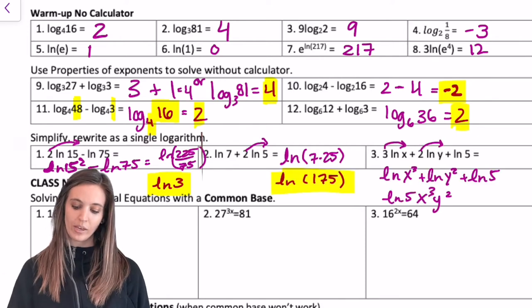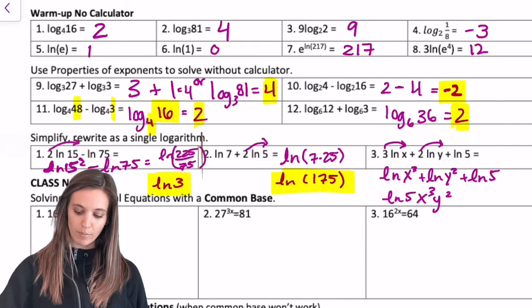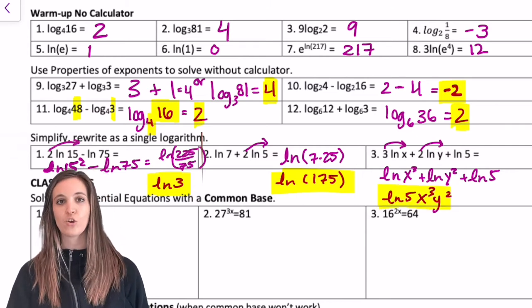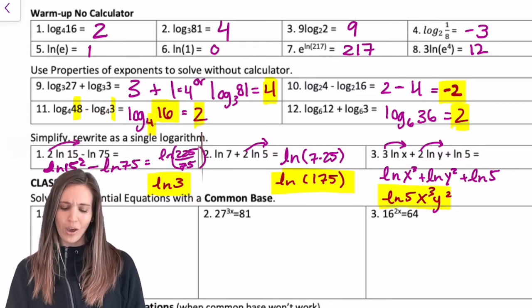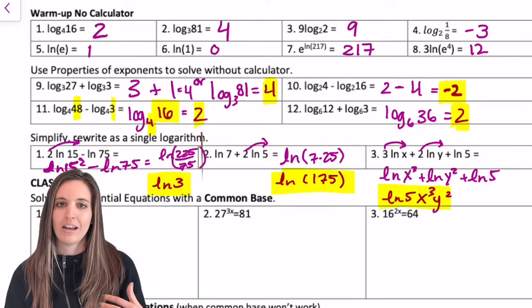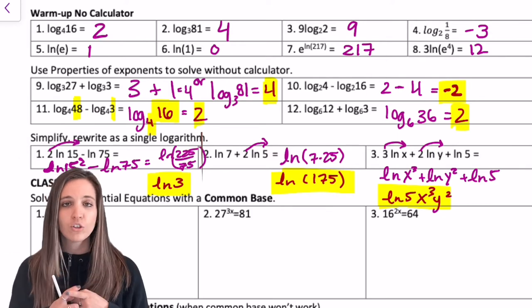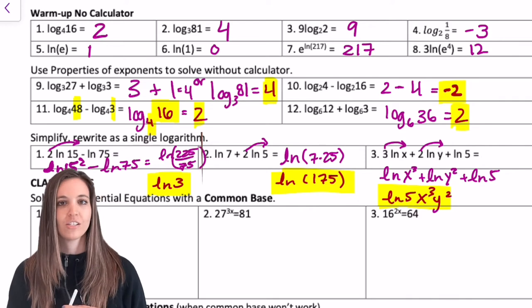So it looks like number 2, we get natural log of 175. And then number 3, we get natural log of 5x cubed y squared. Okay, let's take this to equations now. So we're going to solve exponential equations and logarithmic equations today.